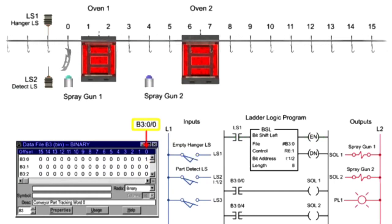With bit 0 containing logic 1, the input status is True, triggering Spraygun 1 output.